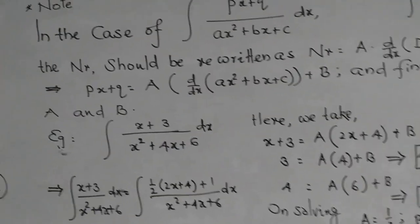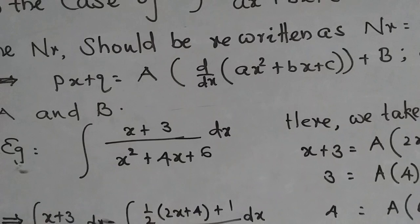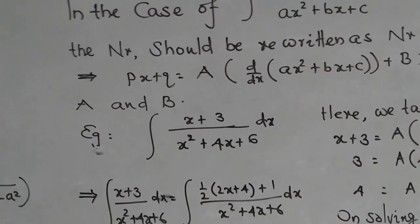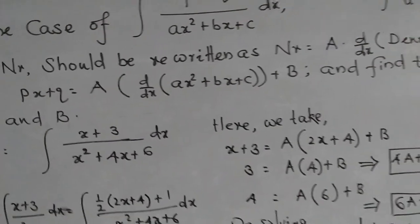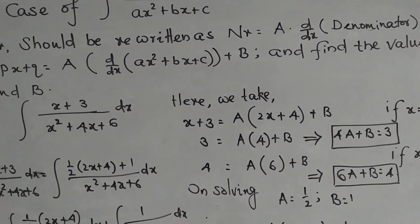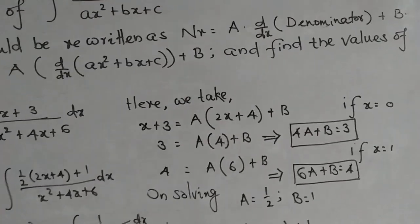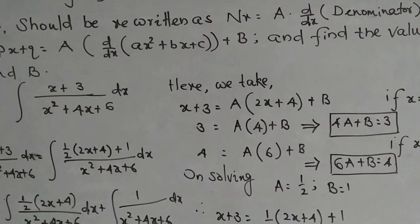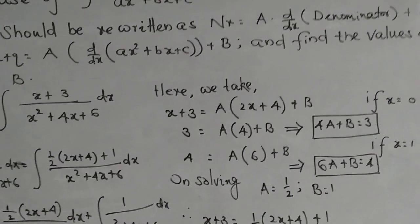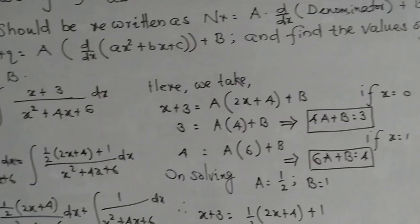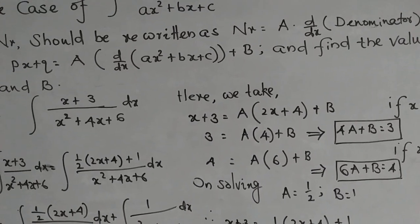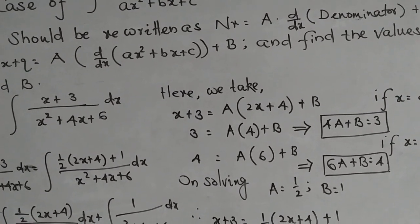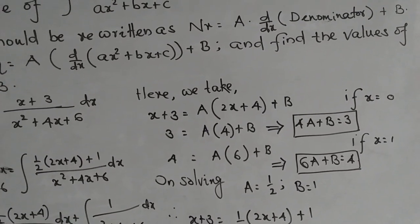Here is an example to illustrate the concept. You are asked to integrate (x plus 3) divided by (x squared plus 4x plus 6) dx. For that purpose we make a substitution: x plus 3 equals A times (2x plus 4) plus B. The numerator is written as A times the derivative of the denominator plus B. You can see that x plus 3 is the numerator, equal to A times (2x plus 4) plus B. Keep in mind that A and B are unknown right now.